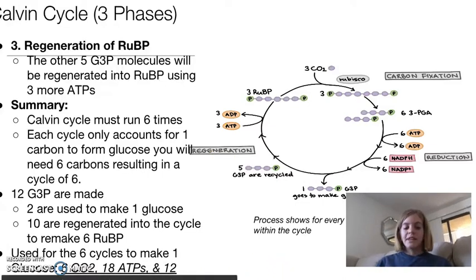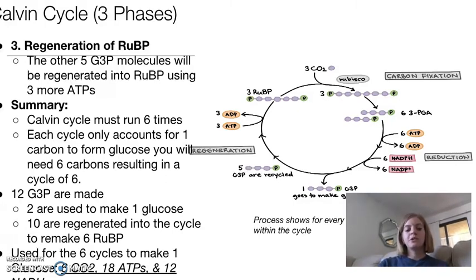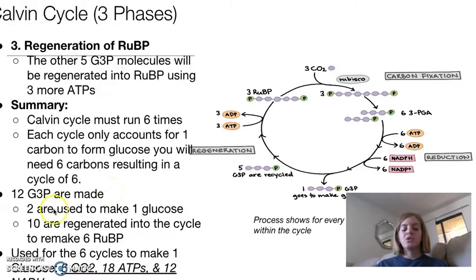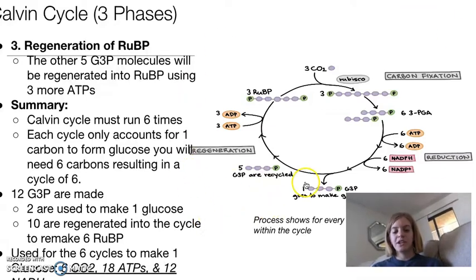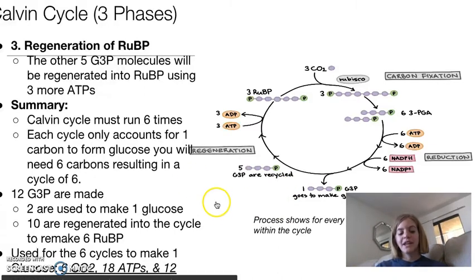As a summary, the Calvin cycle has to run six times in order for us to complete the process of photosynthesis. When we turn through the cycle one time, we only get one carbon out to form glucose. However, we need a total of six carbons, so we need six cycles. From those six cycles, for every three CO2s you get six G3P. So when we have six cycles of the Calvin cycle, we get 12 G3P. Two of those are used to make the glucose — two times three is six, which is how many carbons glucose has — and the other 10 G3P are regenerated into the cycle, making six more RUBP.